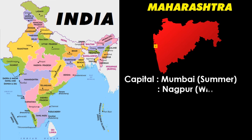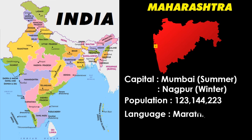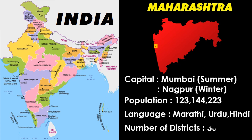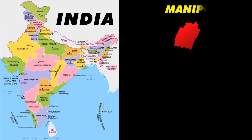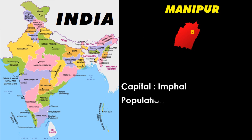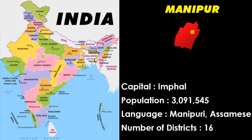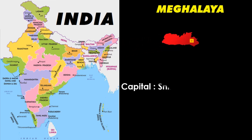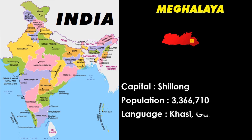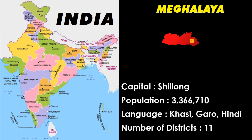Maharashtra: capital Mumbai in summer, Nagpur in winter, language Marathi, Urdu, Hindi. Manipur: capital Imphal, language Manipuri and Assamese. Meghalaya: capital Shillong, language Khasi, Garo, and Hindi.